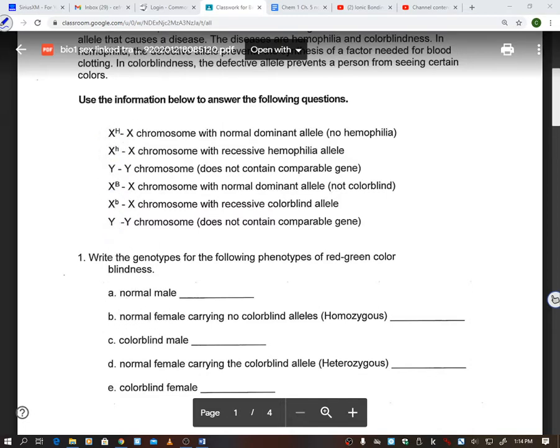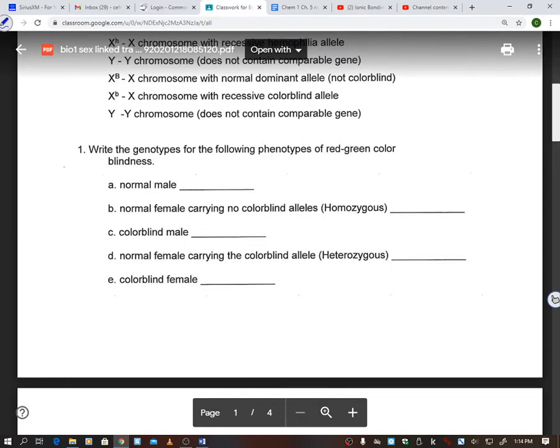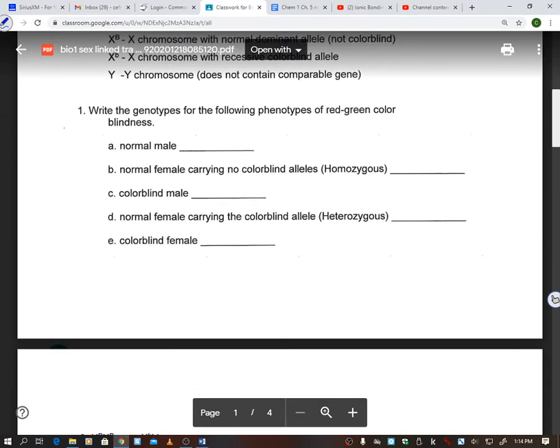So knowing that, I'm going to walk through number one with you guys and how to fill this out. We're going to write the genotypes, which means letters, for the following phenotypes, which is your physical, of red-green colorblindness. So if I am a male, the first thing I'm going to do before I even look at this normal scenario, if I'm a male, I'm automatically going to put X, Y. Once I get that, then I can look at, am I colorblind or not? And they are not. They are not colorblind. So if you look up here at the top, that is a capital B. So that would be a male that is not colorblind.